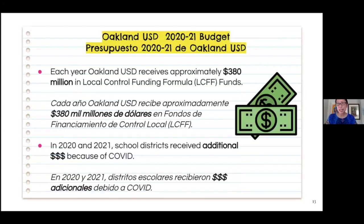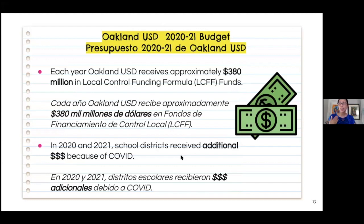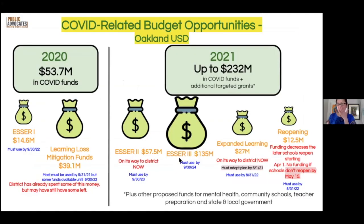Here in Oakland, the district receives approximately $380 million in Local Control Funding Formula funds every year — that's part of the ongoing money, and a lot of it is used to pay for staff. With the impact of COVID and the pandemic, school districts are now receiving additional, very significant money. All school districts are receiving additional one-time money to address the impact of this pandemic and address the needs arising from it.